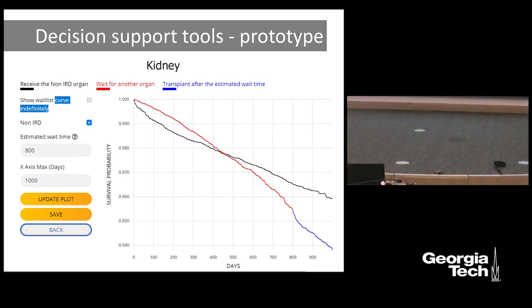We have published some papers on this work and have a prototype decision support tool. This work has been supported by grants from the Arnold Foundation and Mason Trust Foundation. We recently received a smaller seed grant from HIPS that will allow us to pilot this with Emory. We already received informal feedback from several physicians and improved the tool along the way, so hopefully this will move forward and be used more widely in practice.